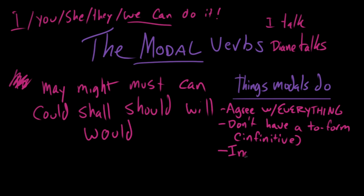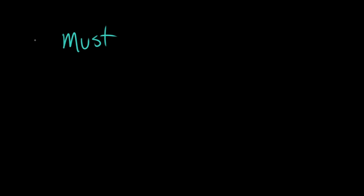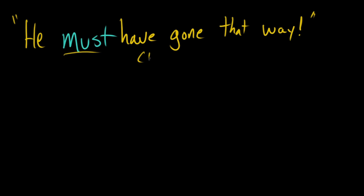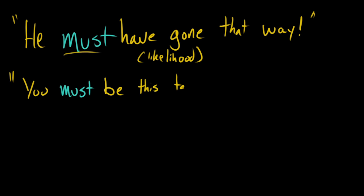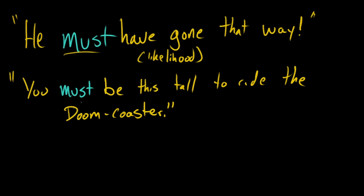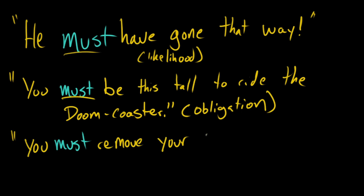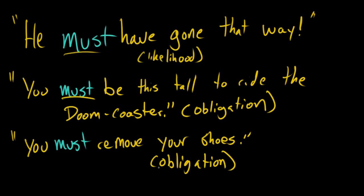And finally, a thing that modal verbs can do is indicate modality, which establishes conditions. Let's take a look at some examples. Take the word 'must' — we can use it in a couple of different ways. If you imagine a detective looking up from some muddy boot prints on the floor with her magnifying glass, she looks up and says, 'He must have gone that way.' That detective is using 'must' to express a high likelihood. But if you're at an amusement park and the roller coaster has a height requirement, the sign says, 'You must be this tall to ride the doom coaster.' This is a necessary condition. Similarly, if you enter someone's house and they demand you take off your shoes, they would say, 'You must remove your shoes.'